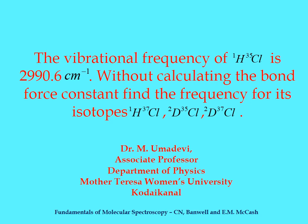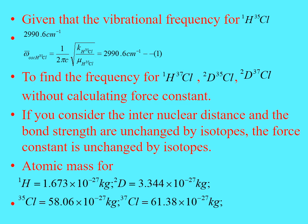The problem is: the vibrational frequency of hydrogen chloride (H³⁵Cl) is 2,990.6 cm⁻¹. Without calculating the bond force constant, find the frequency for its isotopes H³⁷Cl (hydrogen chloride chlorine-37) and D³⁵Cl and D³⁷Cl (deuterium chloride). Given that the vibrational frequency for H³⁵Cl is 2,990.6 cm⁻¹.